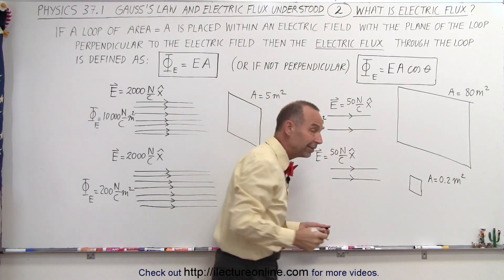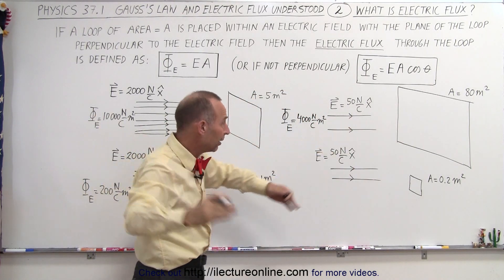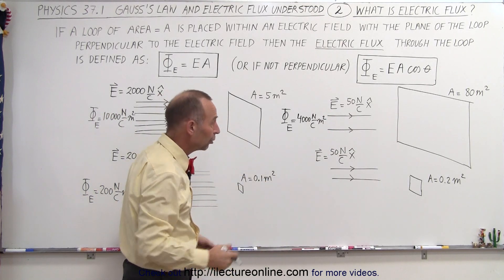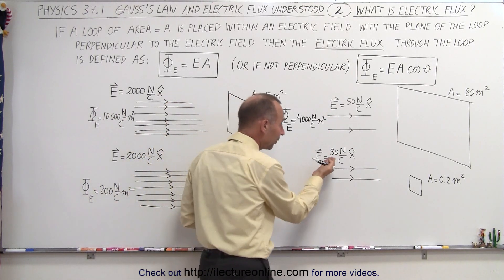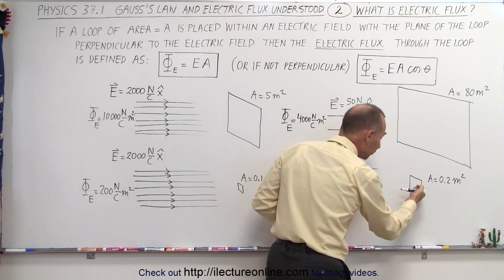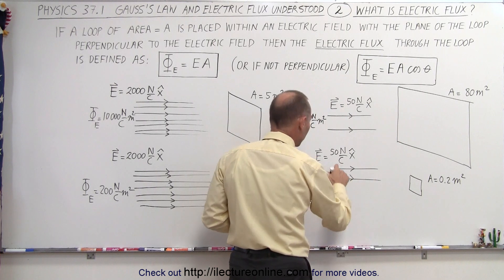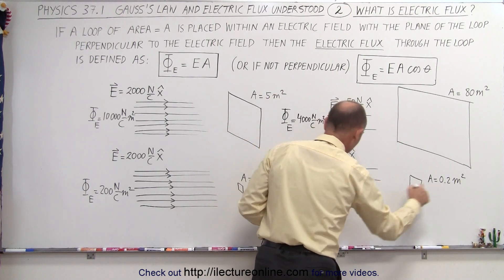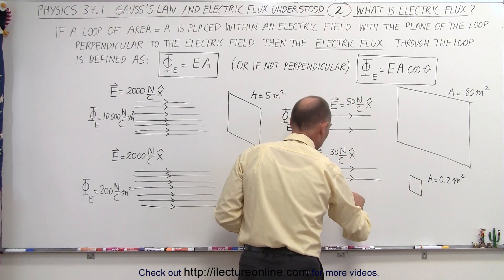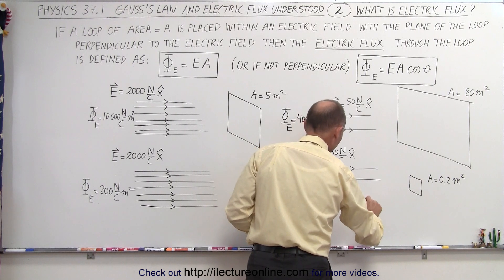So even though it's a very small field, since you have a really big area, you have a lot of flux going through that loop. But if the electric field is very small and the area is very small, then you have very little electric flux going through the loop. Here we multiply 50 times 0.2, that's only 10 N per Coulomb times meters squared.